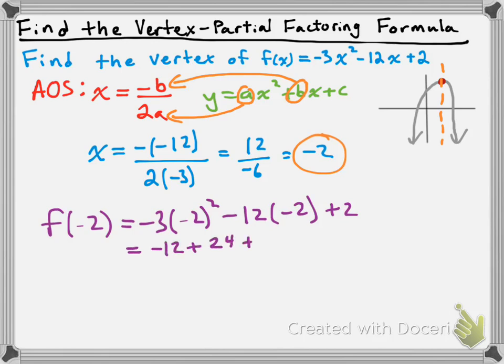So -3 times (-2)² is negative 12. Negative 12 times negative 2 is positive 24. Then we have plus 2 at the end. So negative 12 plus 24 plus 2 is positive 14. The x-value of our vertex was negative 2 and the y-value is positive 14, so our vertex is at (-2, 14). This is how to find the vertex of a parabola using the axis of symmetry formula, also sometimes called partial factoring. Take care, guys.